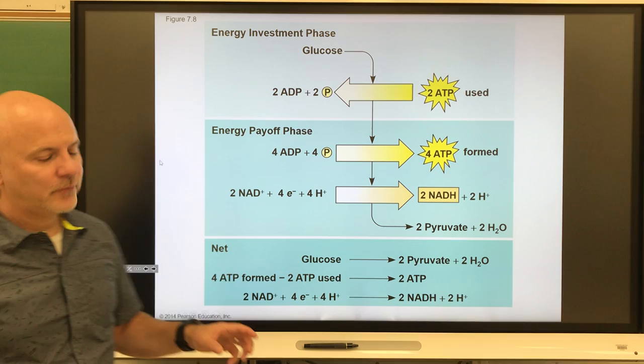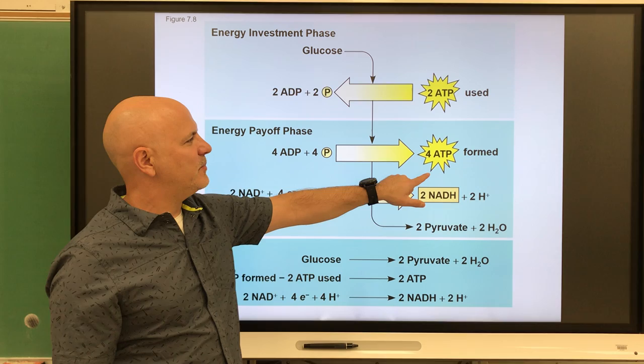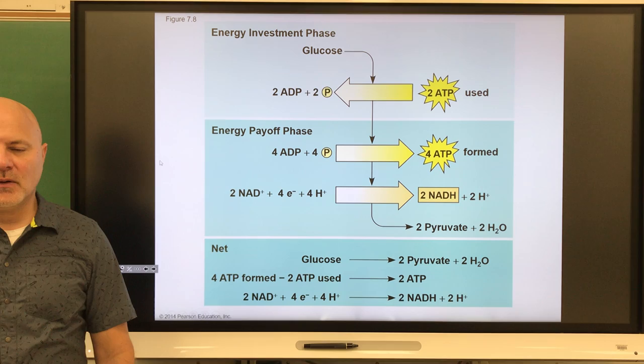Looking at the net result of glycolysis: we used two ATP and formed four ATP, so we only get a net of two ATP. We also made two NADHs and two pyruvates.